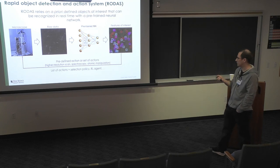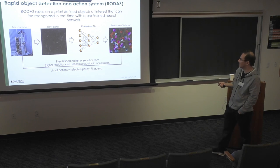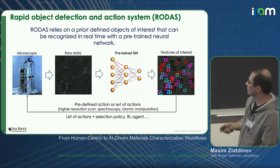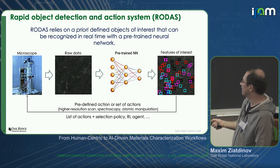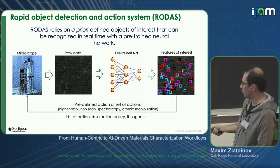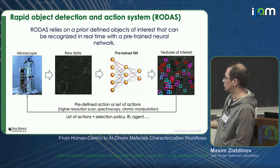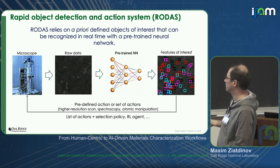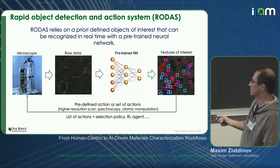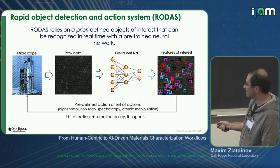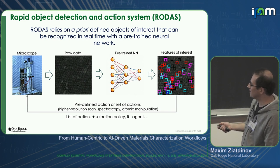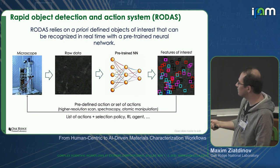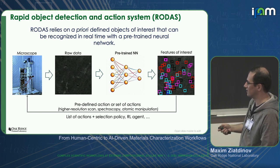How about we replace the human operator with a pre-trained neural net that can identify objects of interest — defined a priori — in our data in real time? This information can be used for actions like high-resolution scans, spectroscopic measurements, or atomic manipulation. You might also have enough data to train reinforcement learning agents. The idea is that a pre-trained neural net could detect all the defects in this image and categorize them into different types within a fraction of a second.